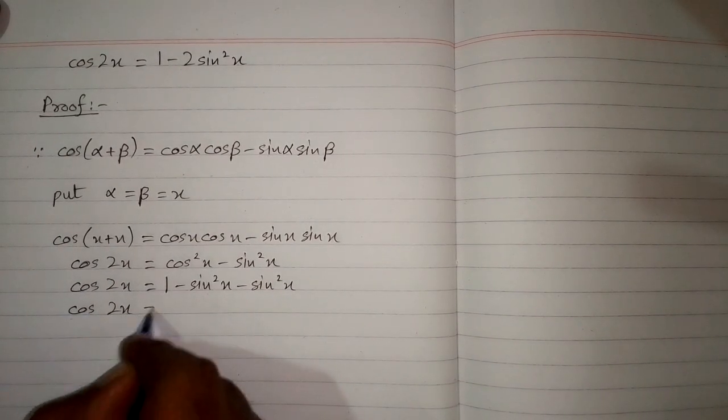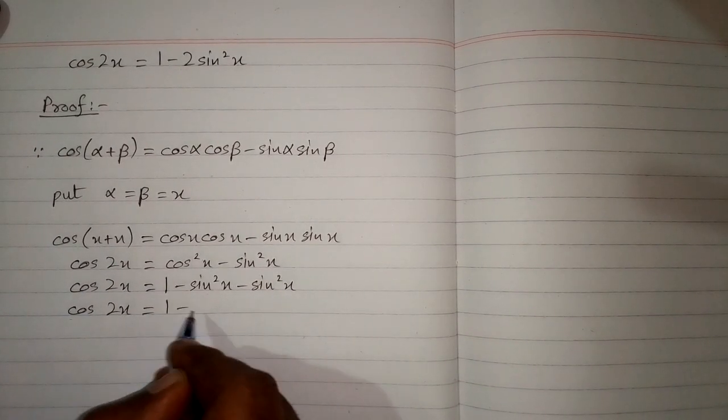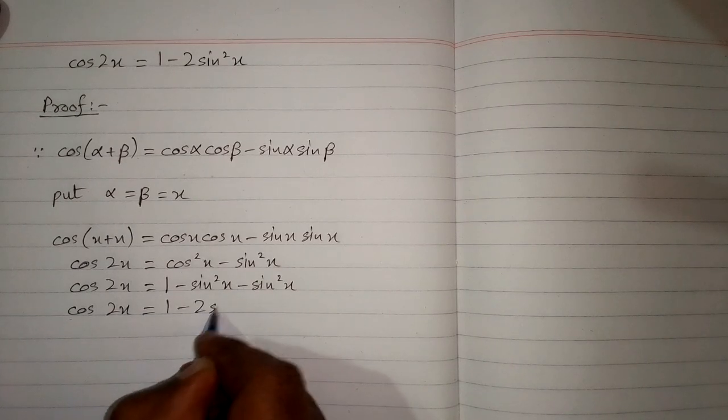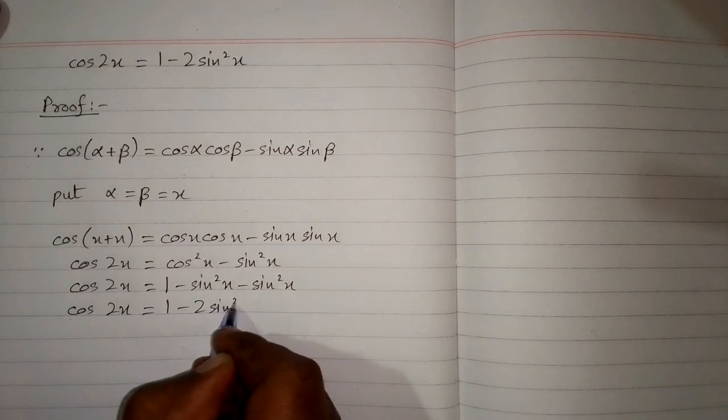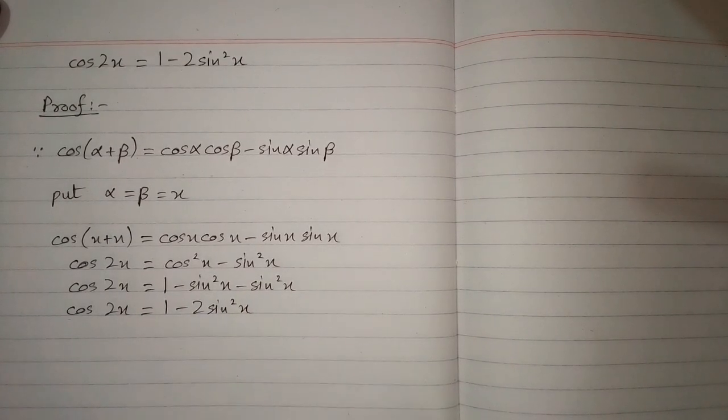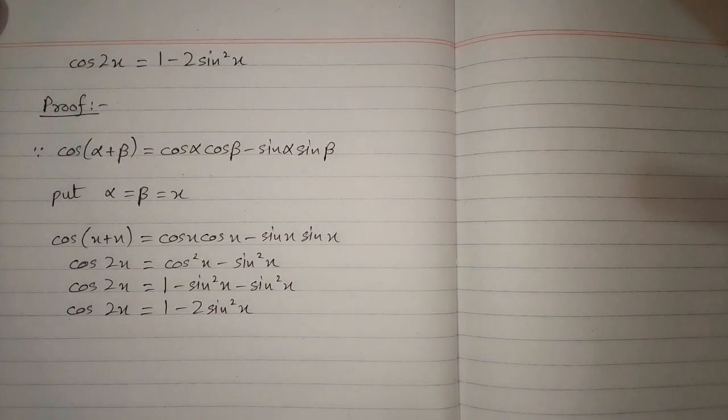And then we have cos 2x is equal to 1 minus 2 sin square x, and this is the required identity.